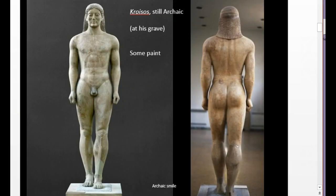Moving along in the Archaic period, we have this next statue. Development is the key word — artistic development towards a kind of naturalism. That is what we tend to think of when we think of Greek art, especially of the figure. This figure is called Kroisos; we know that name from an inscription. He is one of these Kouros — one of these young male statues — and was placed at his grave.